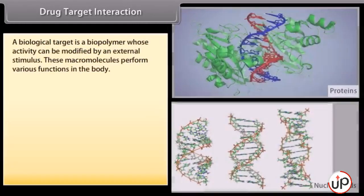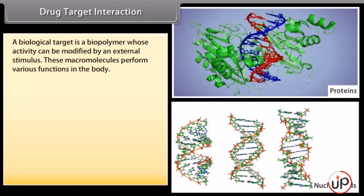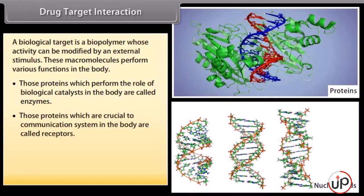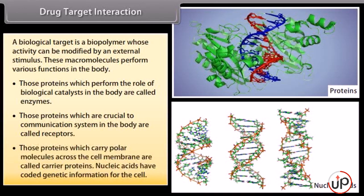Drug target interaction. A biological target is a biopolymer whose activity can be modified by an external stimulus. Those proteins which perform the role of biological catalysts in the body are called enzymes. Those proteins which are crucial to the communication system in the body are called receptors. Those proteins which carry polar molecules across the cell membrane are called carrier proteins. Nucleic acids have coded genetic information for the cell.